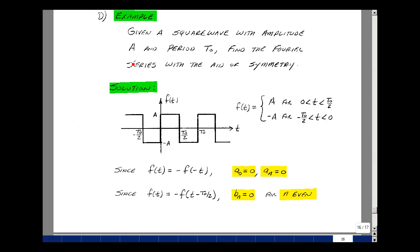Given a square wave with amplitude A and period T0, let's find the Fourier series with the aid of symmetry.